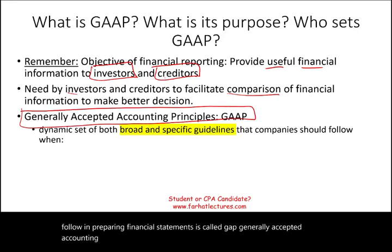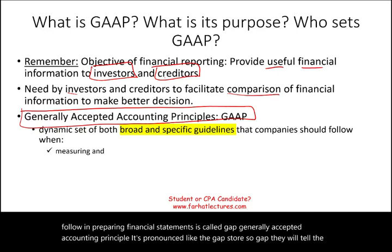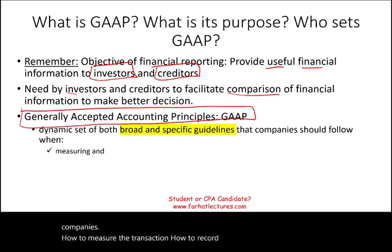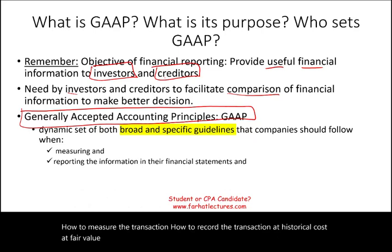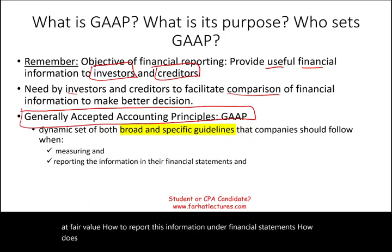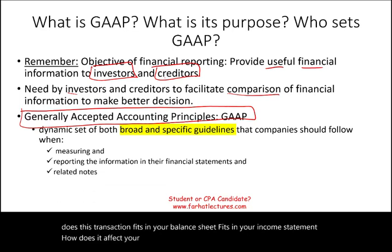GAAP is pronounced like the GAP store. GAAP will tell companies how to measure transactions — at historical cost or at fair value — how to record them, how to report this information on financial statements such as the balance sheet and income statement, and what to disclose in the notes to the financial statements.